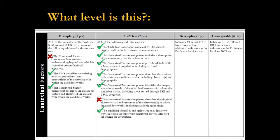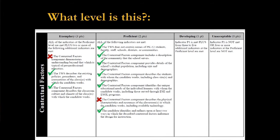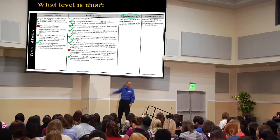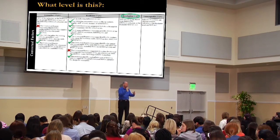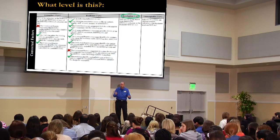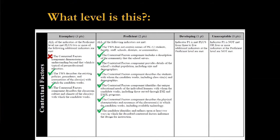What level is this assessed at? Raise your hand if you can tell me. Developing — absolutely correct. Because to be proficient, you have to do all the things in the proficient column. So the rubric is a really great way to look through and check off if you've done everything you're supposed to do. Now it's exemplary because I've got all of the proficient stuff and two of the exemplary indicators.